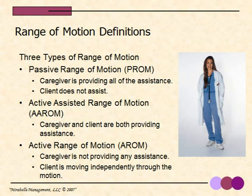There are three different types of range of motion. The most common type that is performed is passive range of motion. This is usually completed when a person is paralyzed or has no strength on an extremity or limb, and they cannot assist with the type of range of motion. It's also great for people who need a really long stretch. With passive range of motion, the caregiver is providing all the assistance, and the client does not help at all.